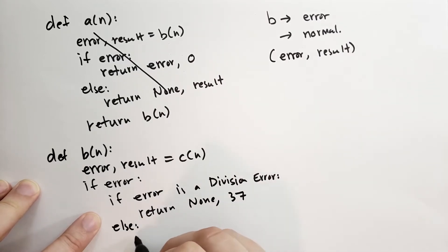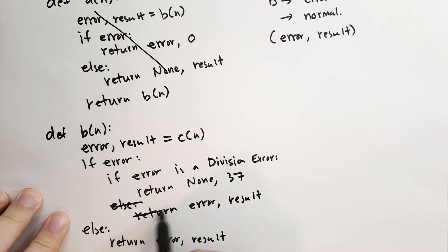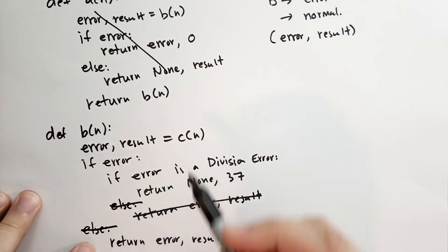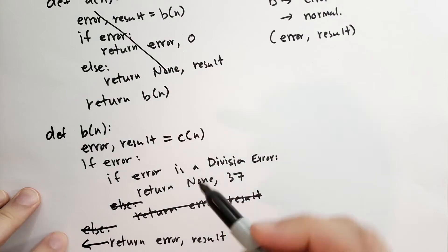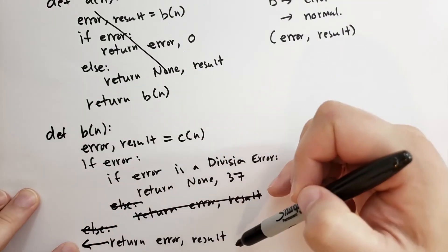Then we're going to return no error and number 37 instead. Otherwise, we'll just return the error as normal. And if there's no error at all, then we'll just return the error and the result.